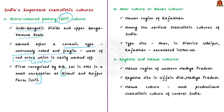The next is the Ahar culture in the Mewar region of Rajasthan, one of the earliest Chalcolithic cultures of India. It is also known as the Banas culture, named after the valley where most of its sites are located. The name 'Ahar' is derived from the site in Udaipur district, which was excavated in 1961–62.